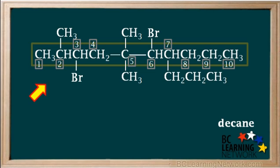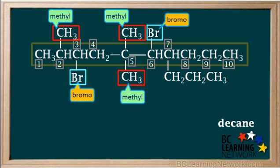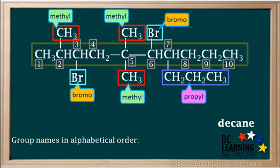At this point, we'll look at the groups attached to the chain. There are three methyl groups, two bromo groups, and one propyl group. Putting the group names in alphabetical order, we get bromo first with a B, then methyl with an M, and lastly propyl with a P.